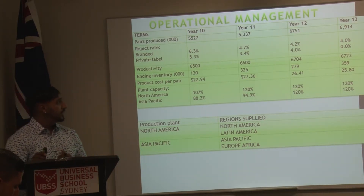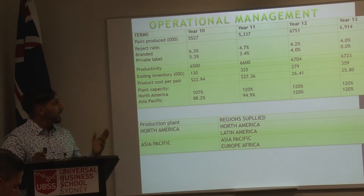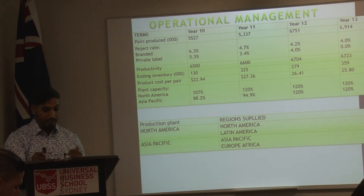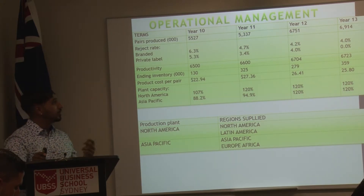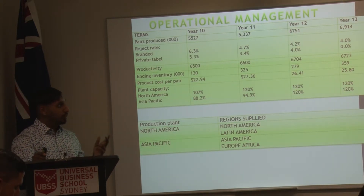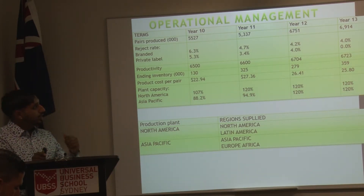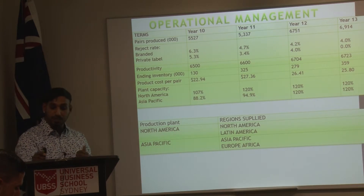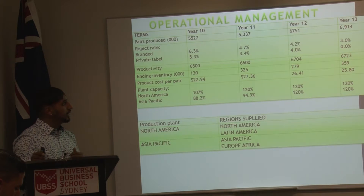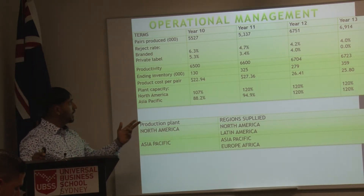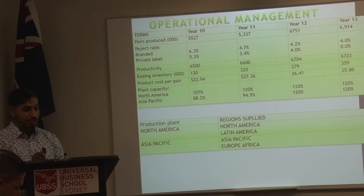The production cost per pair was higher in years 11 and 12 because we spent money on practice training and used superior materials, which cost a little more. In year 13, that cost is reduced because we are using 80% superior material rather than 84% in previous years, which reduced our production cost.